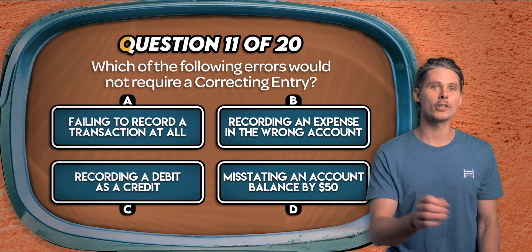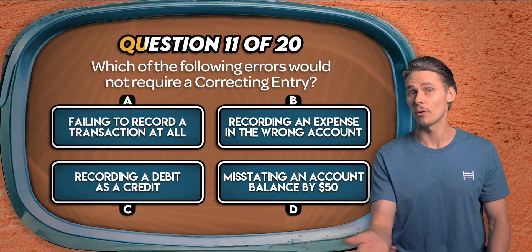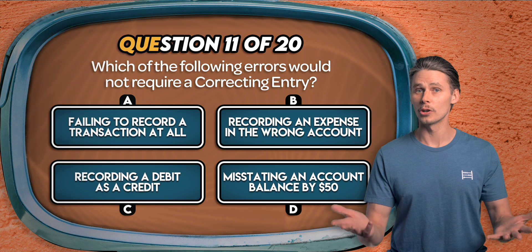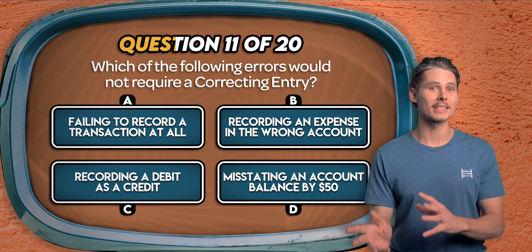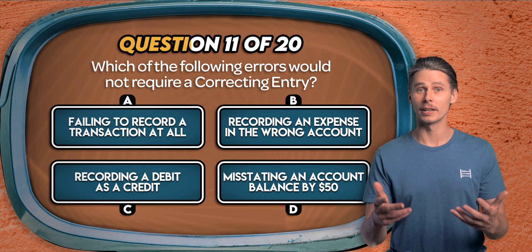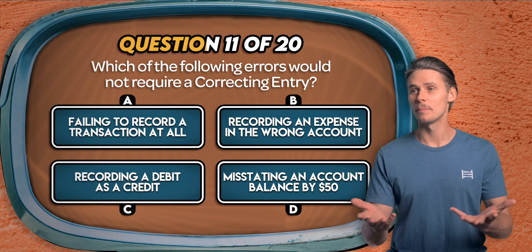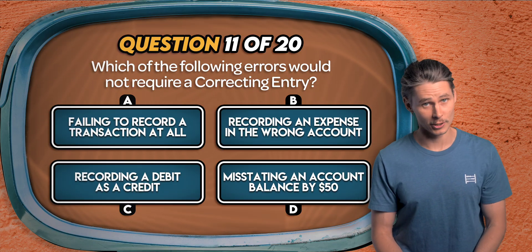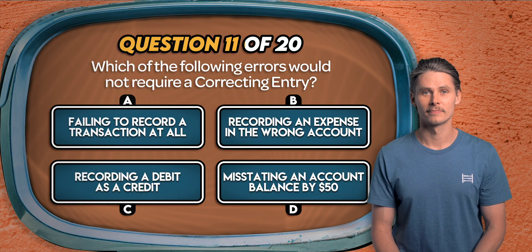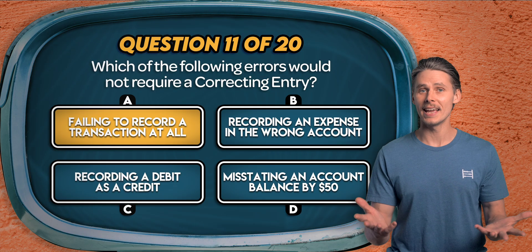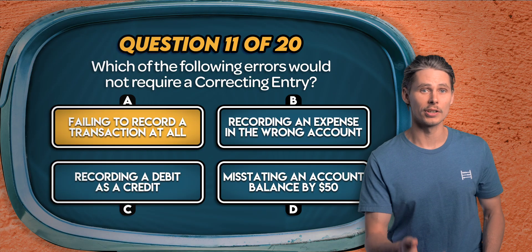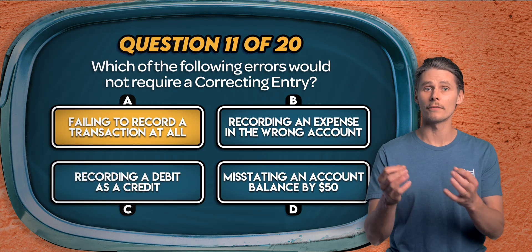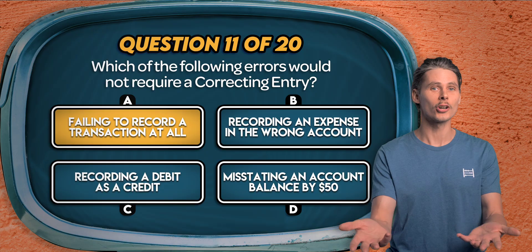Question 11. Which of the following errors would not require a correcting entry? Failing to record a transaction at all, recording an expense in the wrong account, recording a debit as a credit, or misstating an account balance by $50? It's A. If a transaction hasn't been recorded, we don't correct it — we record it for the first time with a normal journal entry.